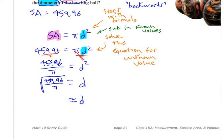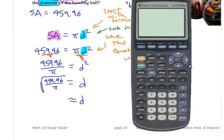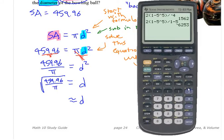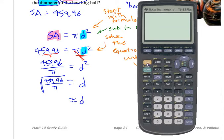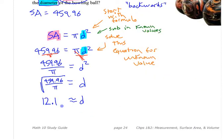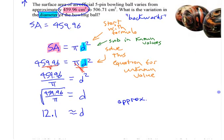And then you can go to your calculator. I like leaving the calculator until the very end, but you could work out the numbers along the way if you wanted. So if you're trying to enter this properly, 459.96 divided by, I would use the pi button on the calculator rather than just putting in 3.14. So you've got square root of that whole thing, 12.1 roughly. So you can say approximately, what are the units on that? Centimeters. If you started with centimeters, you're going to get centimeters.